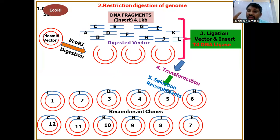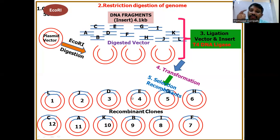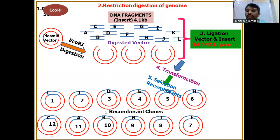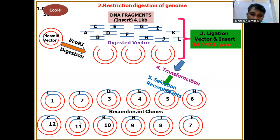The total DNA of the organism is placed across different clones. These are different clones, but each clone has a different fragment. Altogether, they represent the entire genome of the organism. The entire genome is placed in different clones, and that collection of clones — all together representing the entire genome — is called the genomic library.